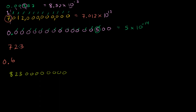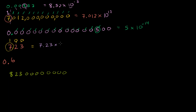Now this number 723 — it might be a little overkill to write in scientific notation, but it never hurts to get the practice. The largest power of 10 that goes into this is 100, or 10 squared. You could say 100 will go into 723. So this is going to be equal to 7.23 times 10 squared.